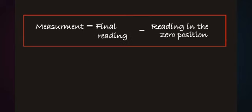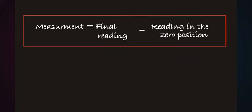But the thickness of the coin is equal to the difference of final reading and reading at the zero position of the spirometer. So the reading at zero position was 0.03. So thickness of the coin is equal to 1.59 minus 0.03. Thickness of the coin is equal to 1.56 millimeters.